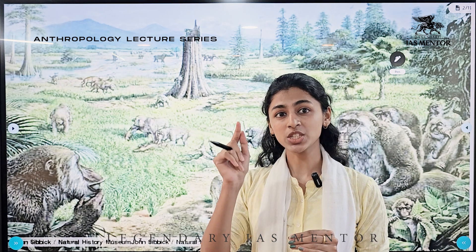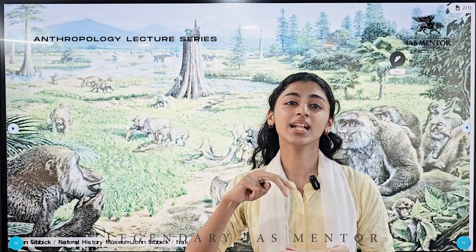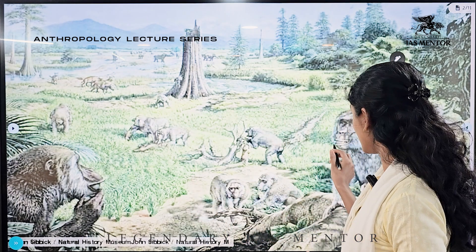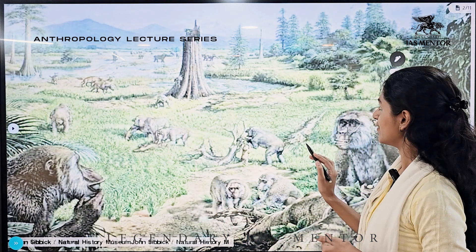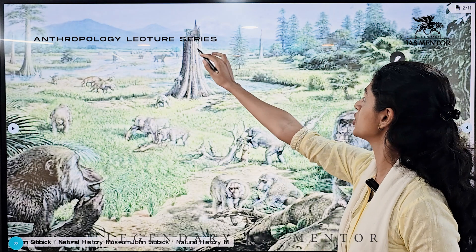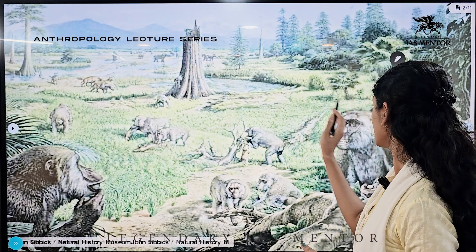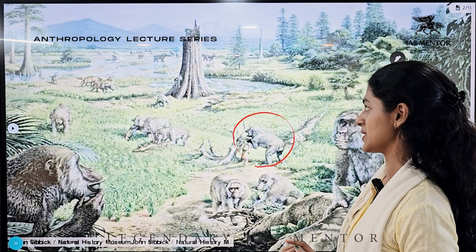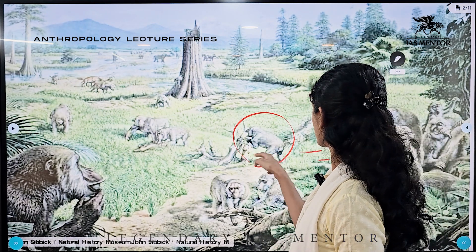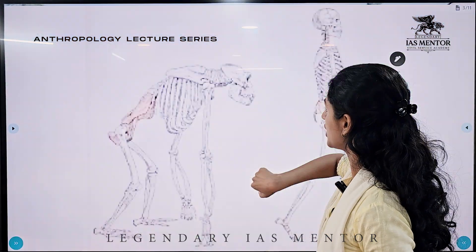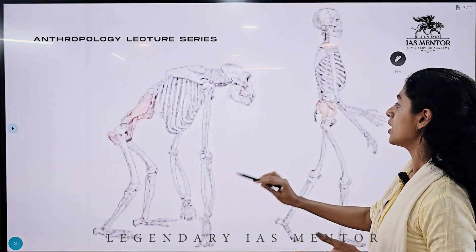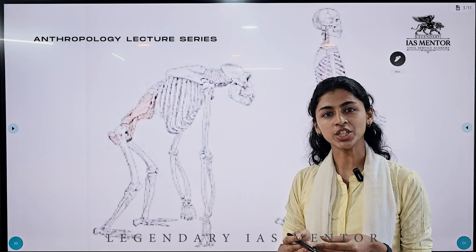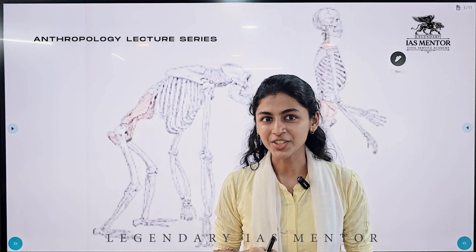Due to this, primates which once lived in trees came down and started living in the terrestrial ecosystem. Grasslands developed, forests got reduced, and thus apes started to live in the terrestrial ecosystem. Because of these ecological changes, these apes transitioned into a hominid species, and the ecological changes prompted anatomical changes in response.